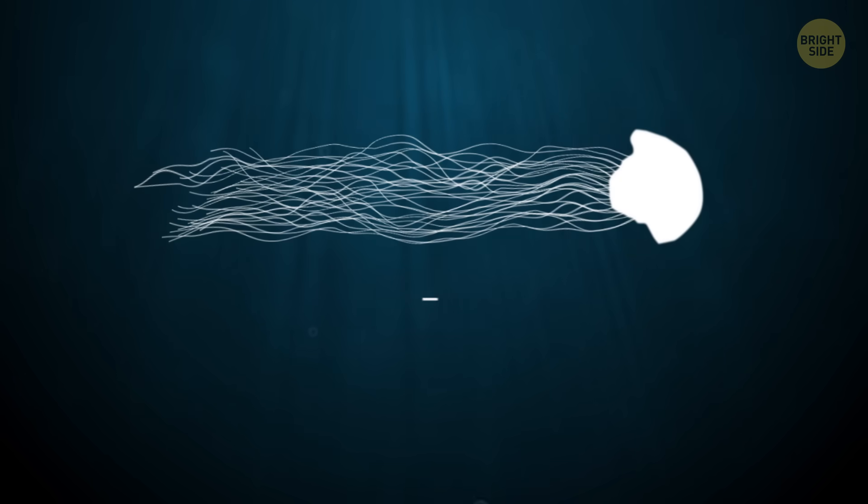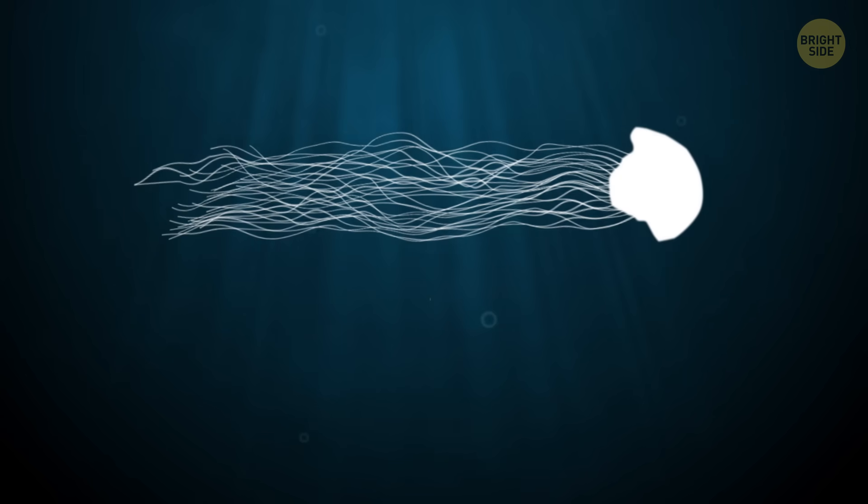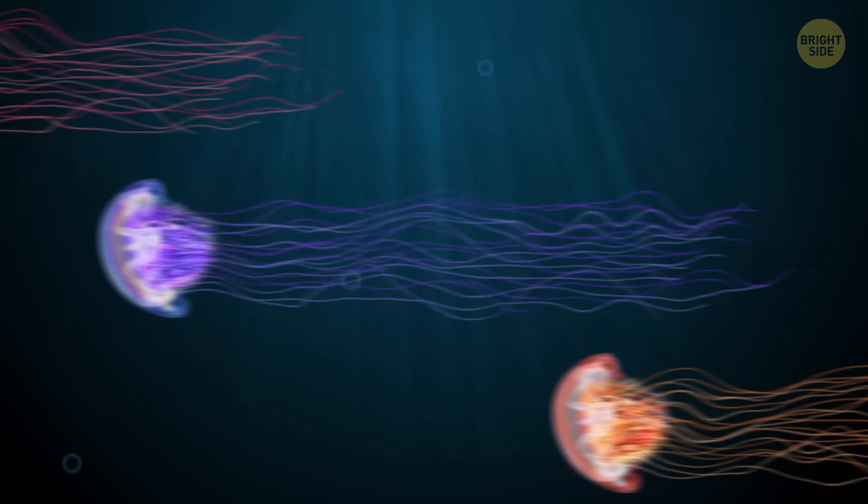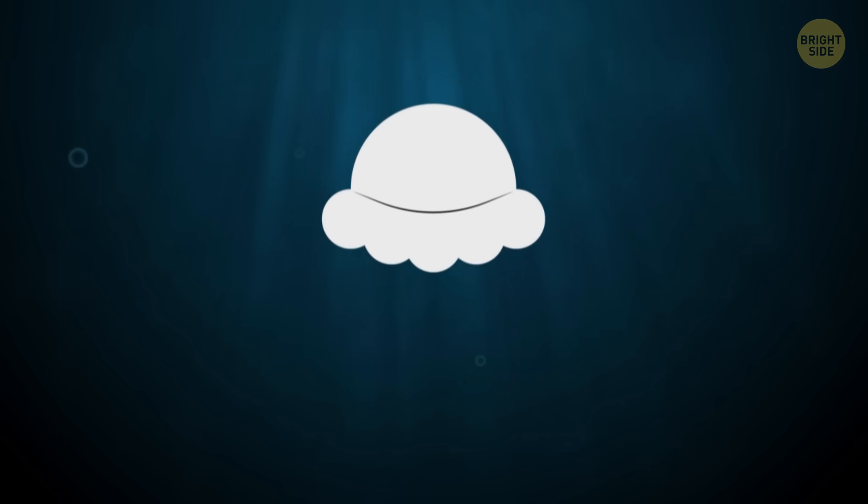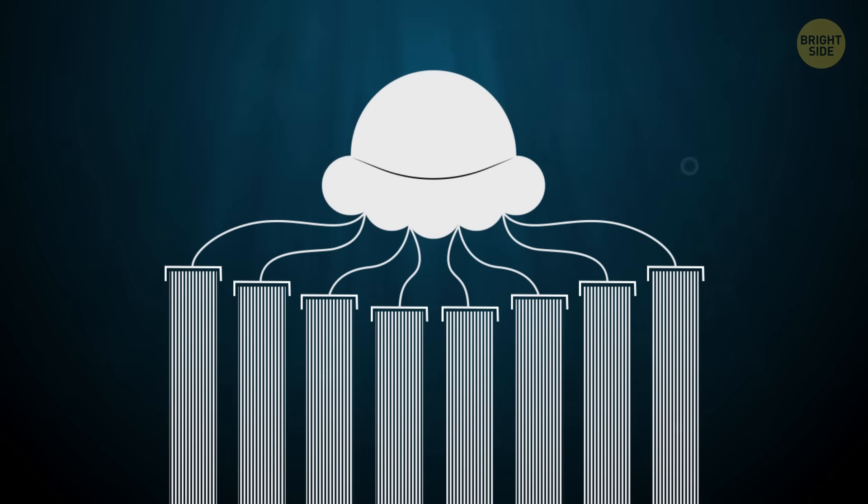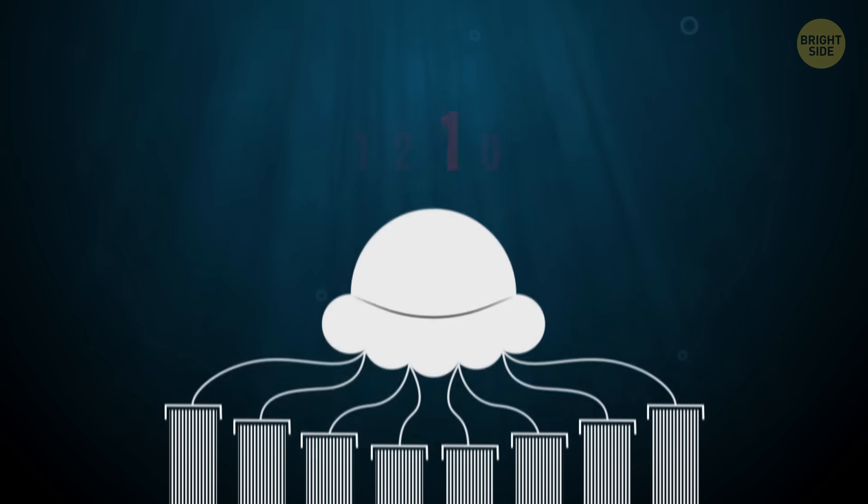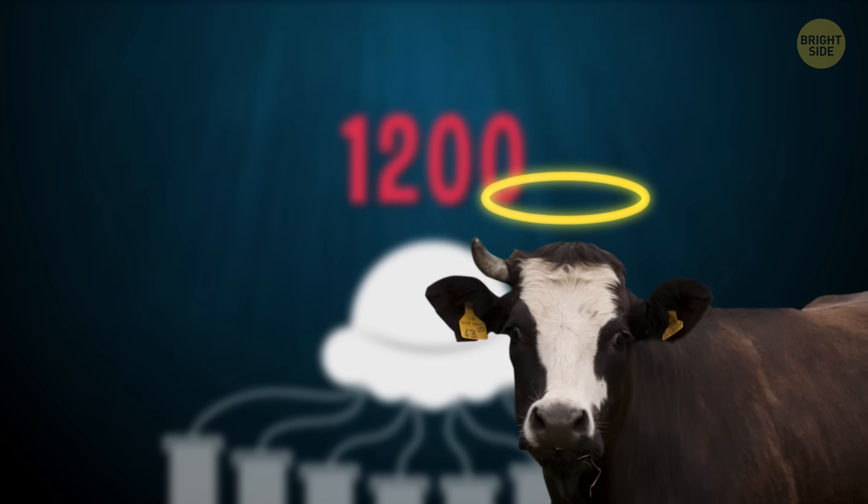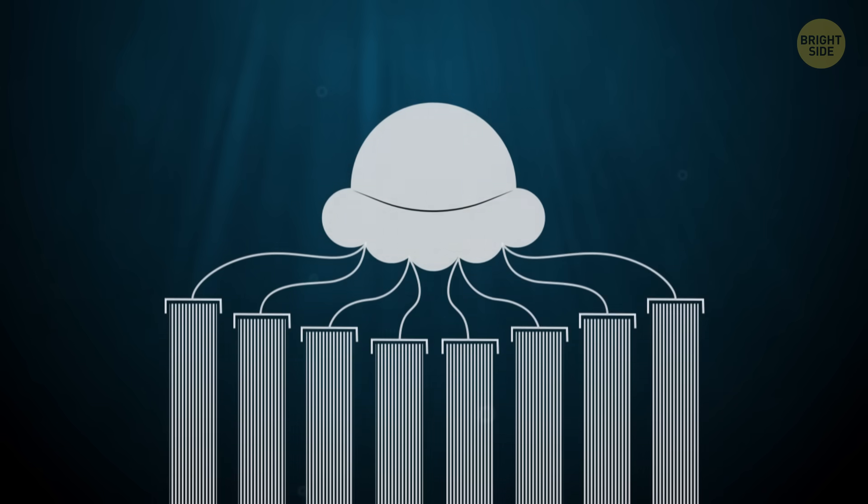This invertebrate can grow up to 120 feet long. They also come in different gorgeous colors like red, purple, or even shades of orange. And as if their length wasn't impressive, the lion's mane jellyfish boast a whopping 8 sets of 70 to 150 tentacles. That means they can have up to 1,200 in total. Holy cow! I mean, holy jellyfish!